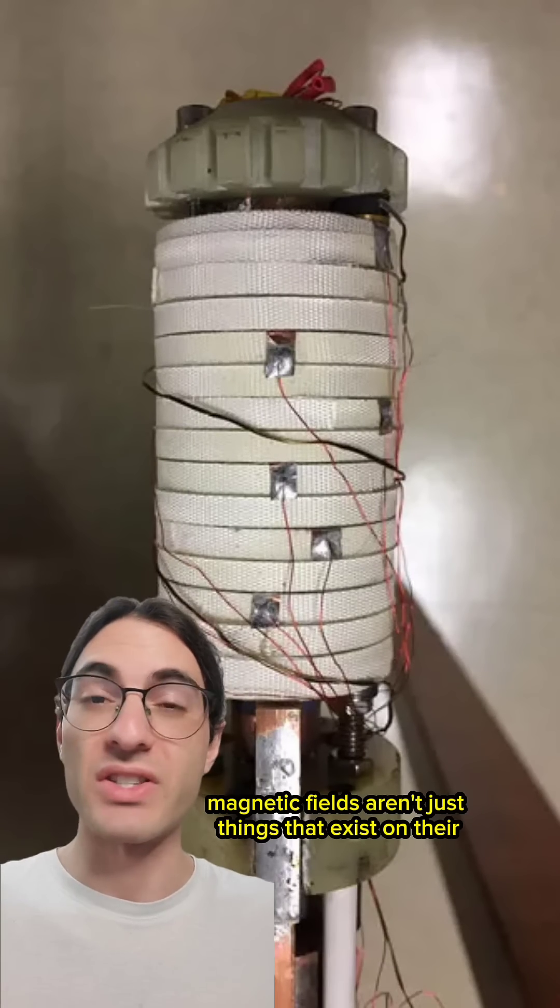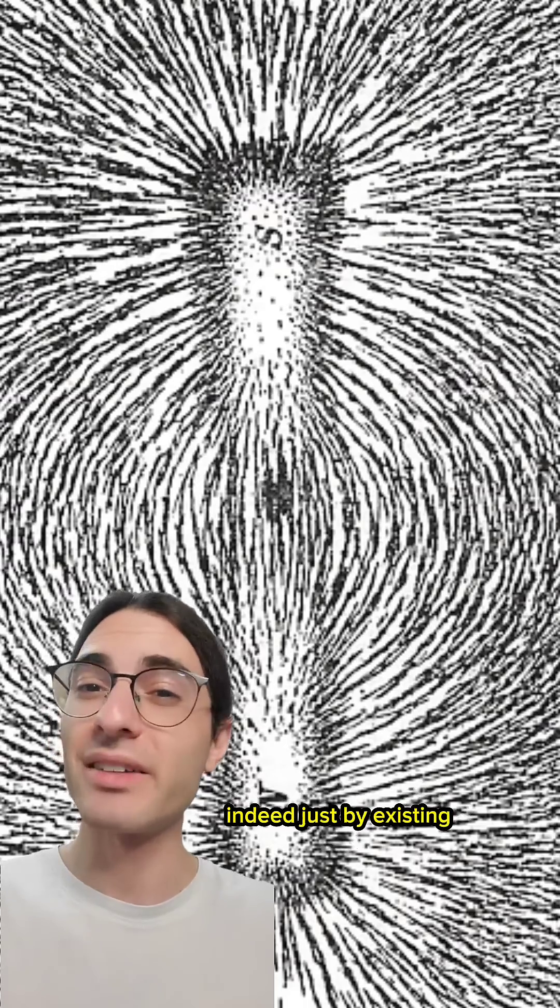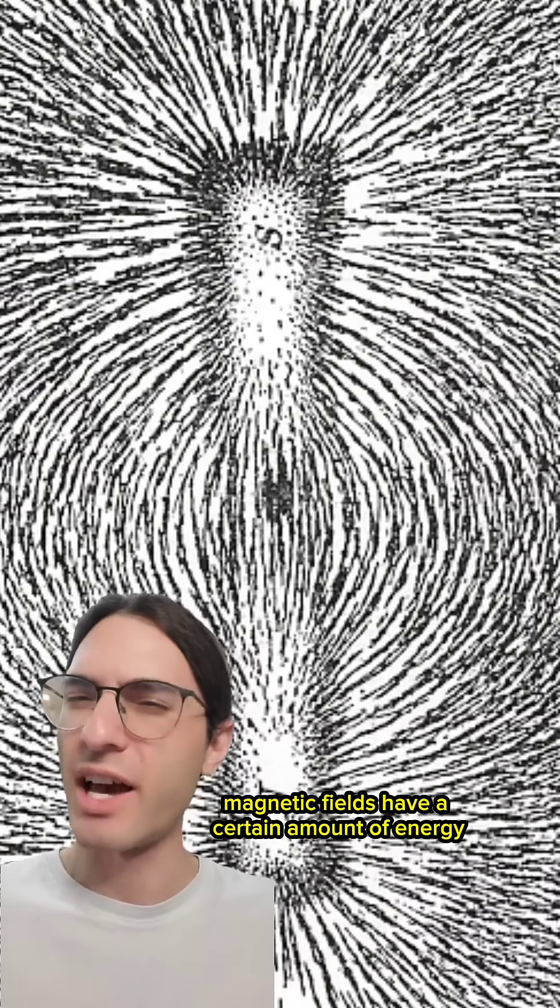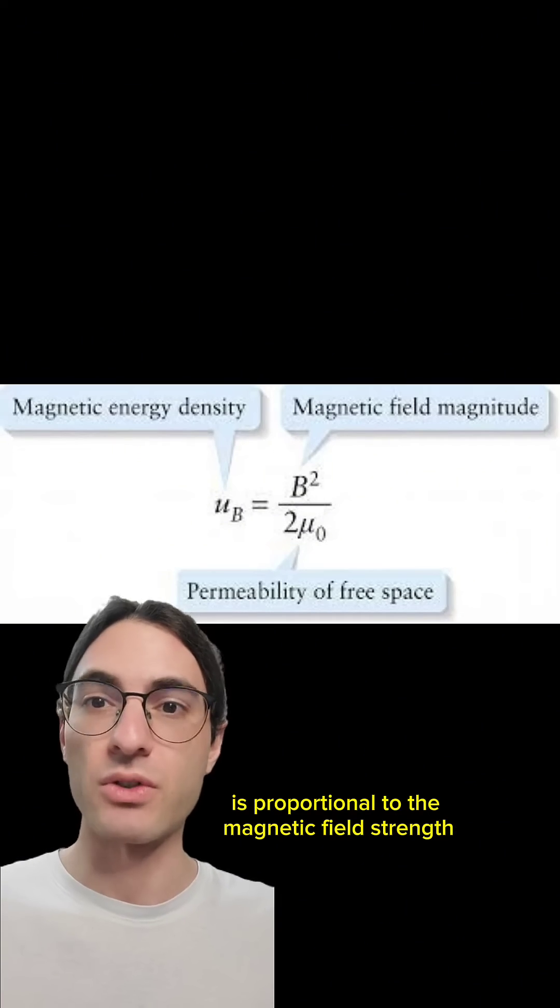But magnetic fields aren't just things that exist on their own. They exist in the context of all in which they live. Indeed, just by existing, magnetic fields have a certain amount of energy. The amount of energy in a given volume is proportional to the magnetic field strength in that volume squared.